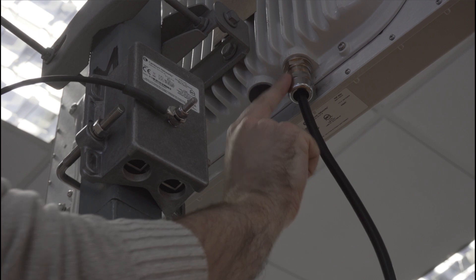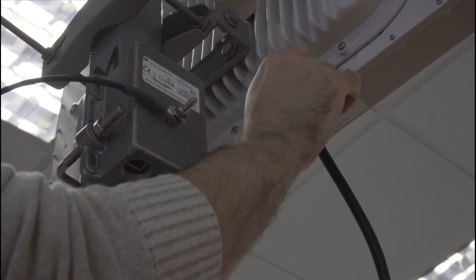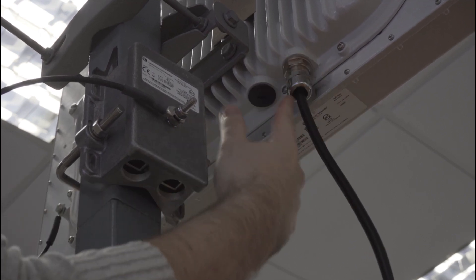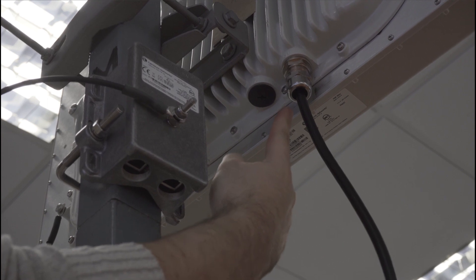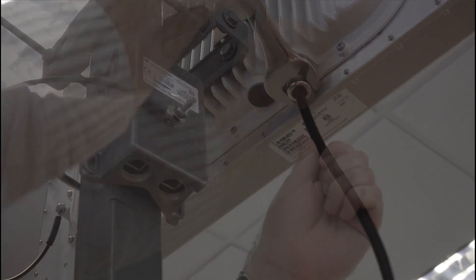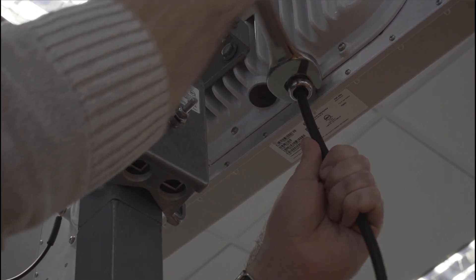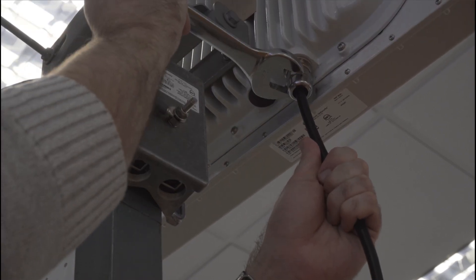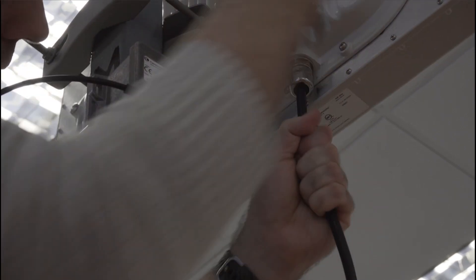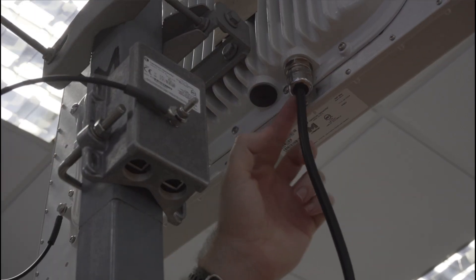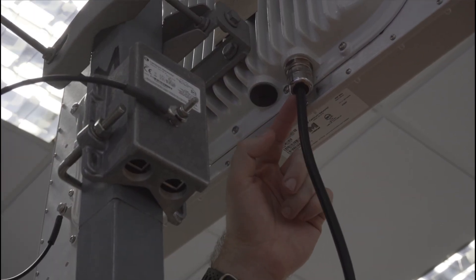Next, you need to tighten the cap until the rubber insert is seen pushing through the hole in the cap. Again, holding the drop cable to make sure that it doesn't twist. As you can see, the rubber insert is pushing through now.